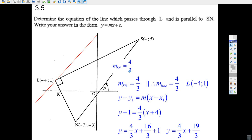Well, we know that the gradient of SN is 4 over 3, we worked it out before. And if a line is parallel, then it's got the same gradient, so the gradient of the line must be 4 over 3 if it's parallel.